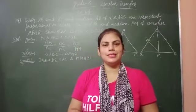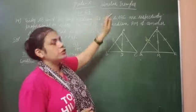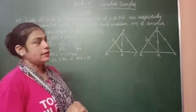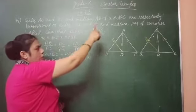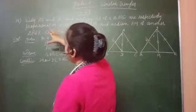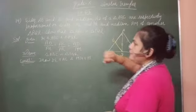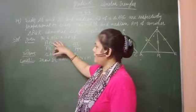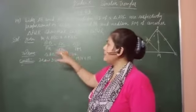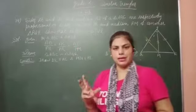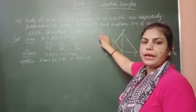Hello students, I am Renu, your math teacher. Now we will start our next question — question 14 of exercise 6.3 of chapter Similar Triangles of grade 10. Here we have given that sides AB and AC and median AD of triangle ABC are respectively proportional to sides PQ, PR and median PM. What we have to prove is that triangle ABC is similar to triangle PQR.